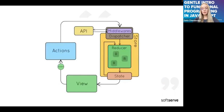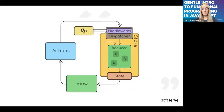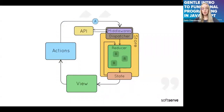Redux is a functional library in the sense that it promotes functional programming. It uses pure functions to manage application state. In Redux, the application store is stored in an immutable object tree, and state updates are triggered only by pure functions. This approach allows for predictable state management and makes it easier to reason about the behavior of the application. Redux also makes use of higher-order functions and function composition to create middlewares and other abstractions.